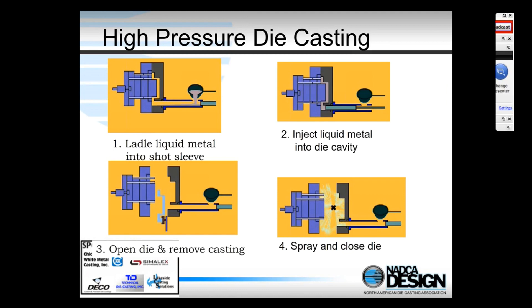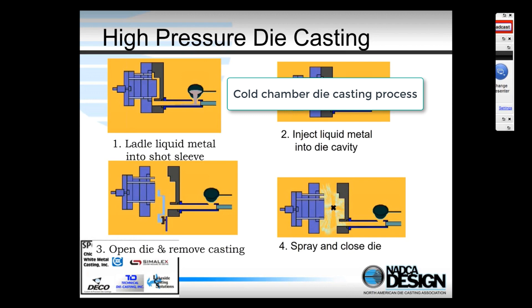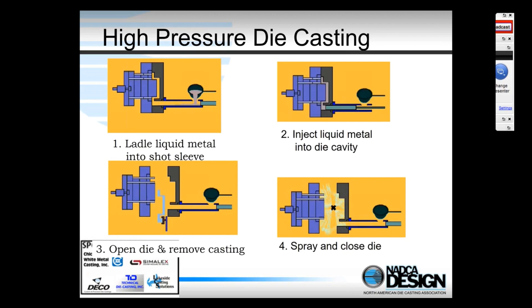This schematic shows the cold chamber die casting process. In stage one, the dies are clamped closed — applying the clamping load to the dies. Then we have a horizontal sleeve, and liquid metal is ladled into it, either by hand or more commonly by an automatic ladling machine. The plunger then moves forward, hydraulically operated under very closely controlled conditions, and injects the metal into the die cavity.